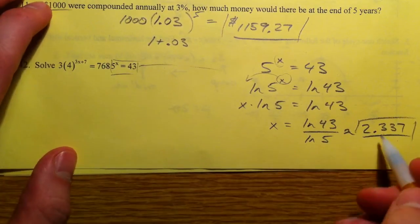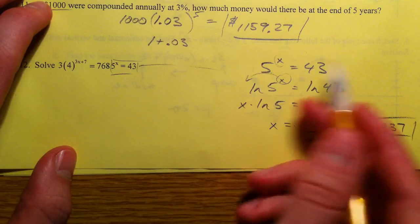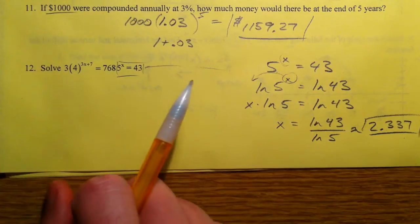You should get 2.337. You can always double check that by doing 5^2.337. 5 squared is 25 and 5 cubed is 125, so you know it's got to be between 2 and 3.